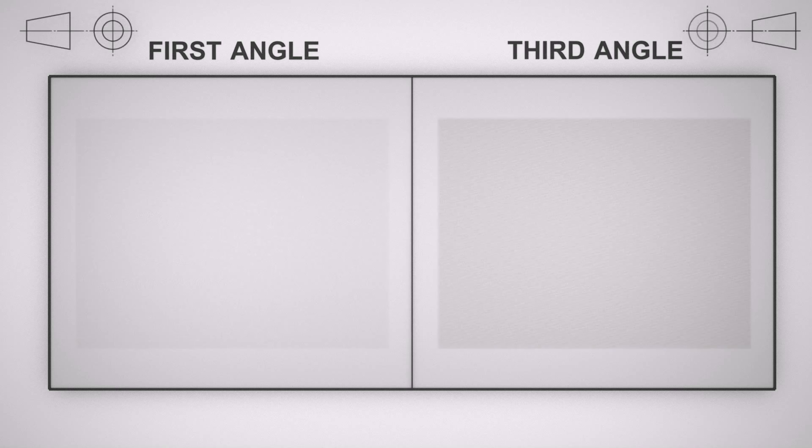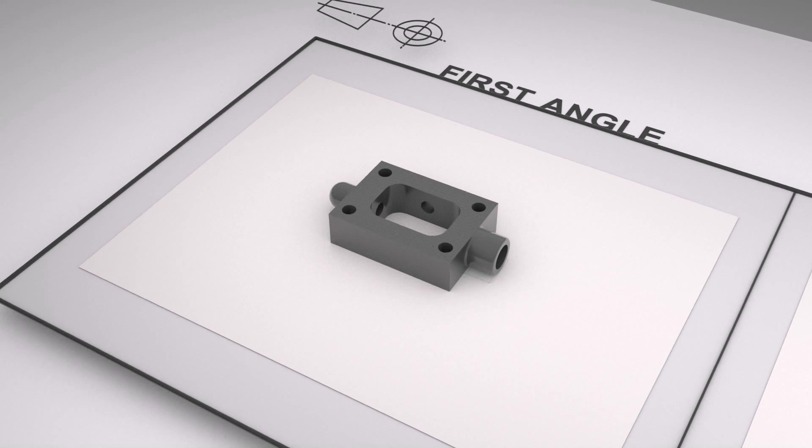So once again let's look at first angle first. Now we're going to use the same front view in each example. The cylinder is going to lie on the right, the dome on the left and the hole at the top as far as unique features go.